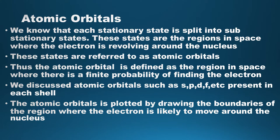In the previous section we learned that each stationary state is split into sub-stationary states. These sub-stationary states are the regions in space where the electron is revolving around the nucleus. These states are referred to as atomic orbitals. Thus, the atomic orbital is defined as the region in space where there is a finite probability of finding the electron. We previously discussed atomic orbitals such as s, p, d, f, etc., present in each shell K, L, M, N, and so on.